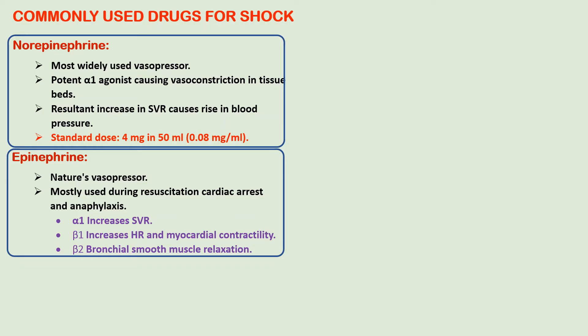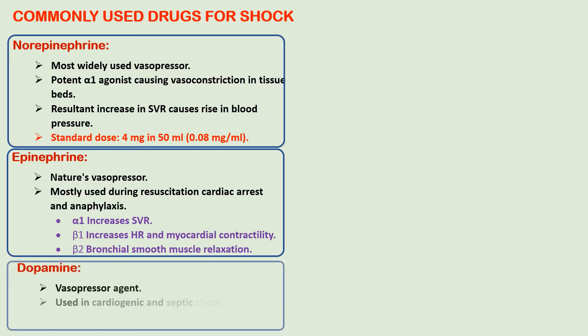Epinephrine acts on both alpha and beta receptors. By acting on alpha-1 it increases systemic vascular resistance, and by acting on beta-1 it increases heart rate and myocardial contractility. The third drug, dopamine, is a vasopressor mainly used in cardiogenic and septic shock, and it can also be used in severe CHF, where it increases blood pressure and urine output.